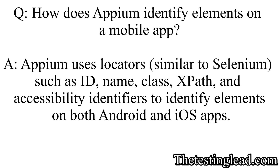How does Appium identify elements on a mobile application? Appium uses locators similar to Selenium, such as ID, name, class, XPath, and accessibility identifiers, to identify elements on both Android and iOS apps.